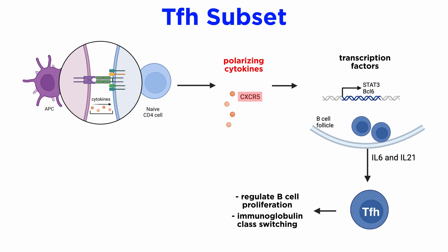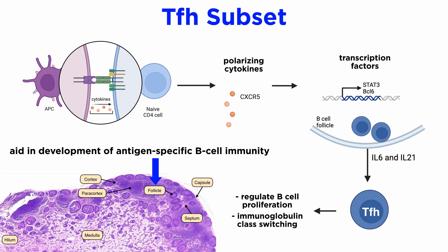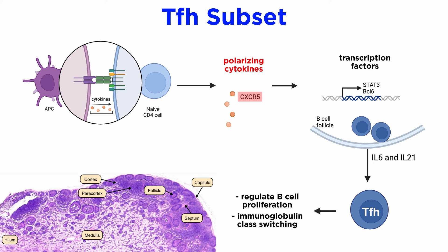TFH cells are CXC-motif receptor 5, or CXCR5-plus expressing cells. They are located in the follicular areas of lymphoid tissue, where they participate in the development of antigen-specific B cell immunity. If the chemokine receptor CXCR5 is expressed, the early TFH cell will migrate to the border of the B cell follicle and undergo further TFH cell differentiation. IL-6 and IL-21 regulate the differentiation process. Transcription factor STAT3 is activated downstream to cytokine signaling and is a key player in lineage commitment. BCL-6 plays a major role in the differentiation of TFH.